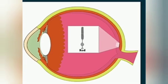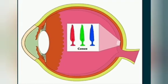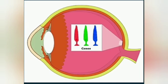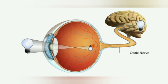Cone cells are more abundant in the fovea centralis and each cone cell consists of a photosensitive pigment called iodopsin, which is violet colored. These cells are sensitive to both bright light and color, so we are able to see the colors of objects because of cone cells. Iodopsin gives color vision, and if there is insufficient iodopsin it results in color blindness — the person will not be able to differentiate between different colors.